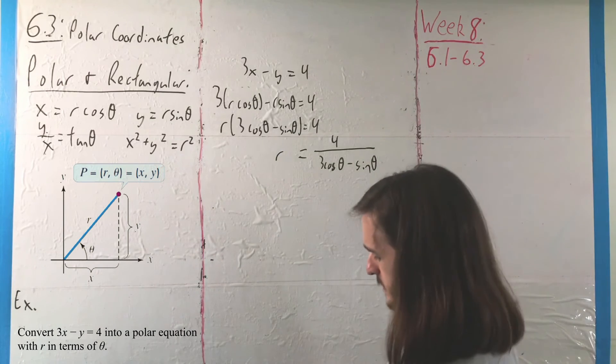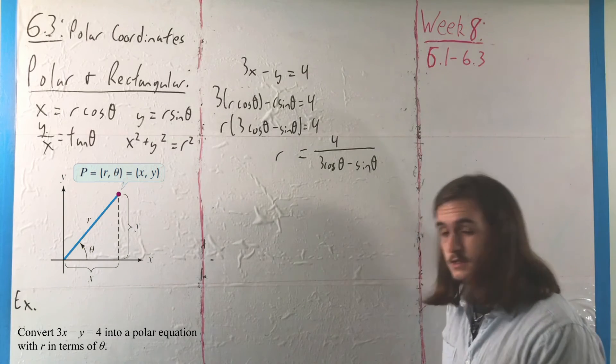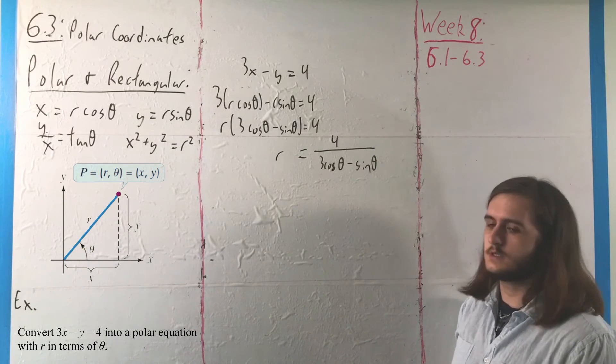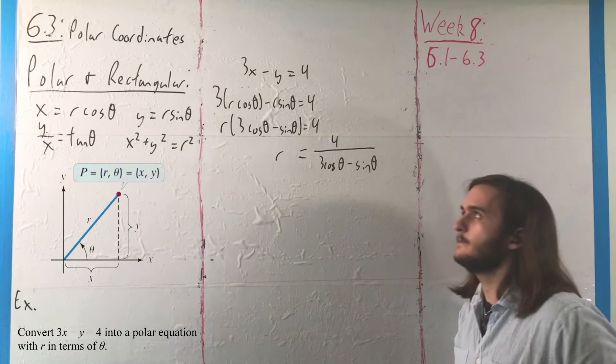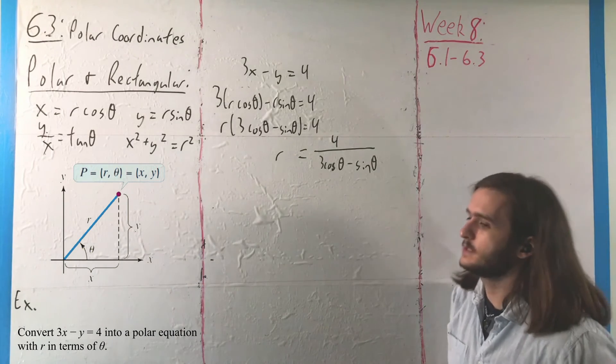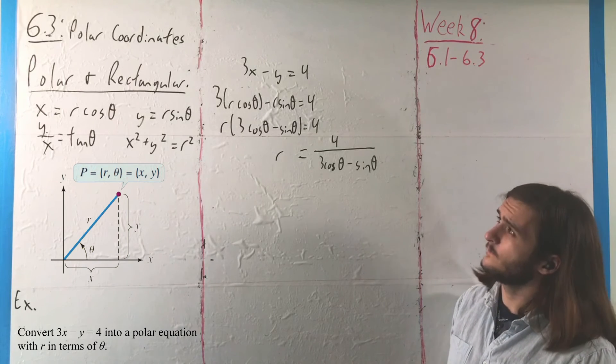Where, thinking about what 3x minus y equals 4 is, it should be not too hard to tell that that is a line of slope 3 with intercept at 4,